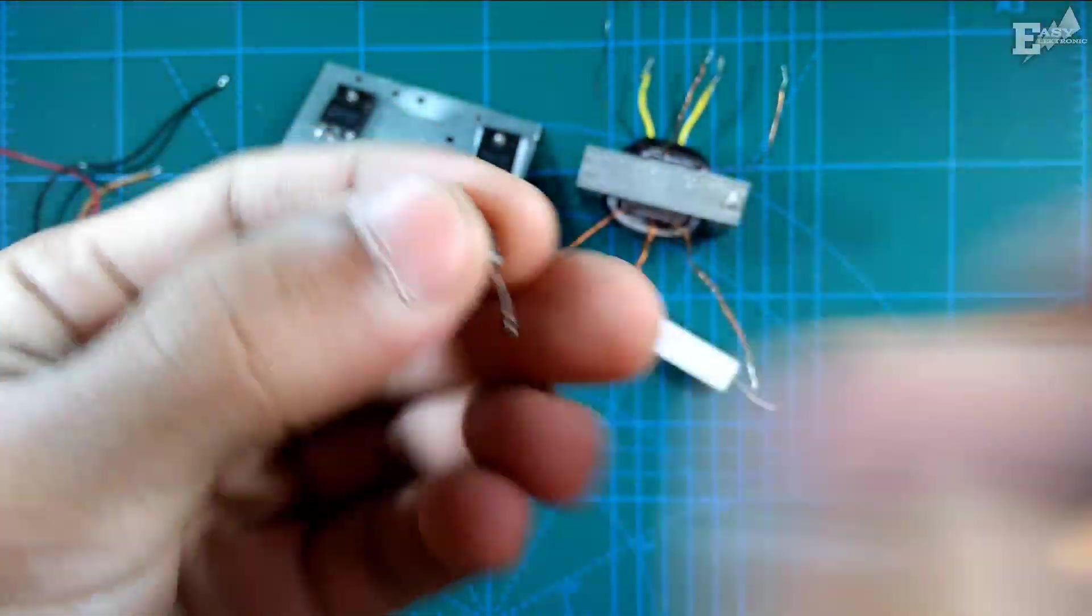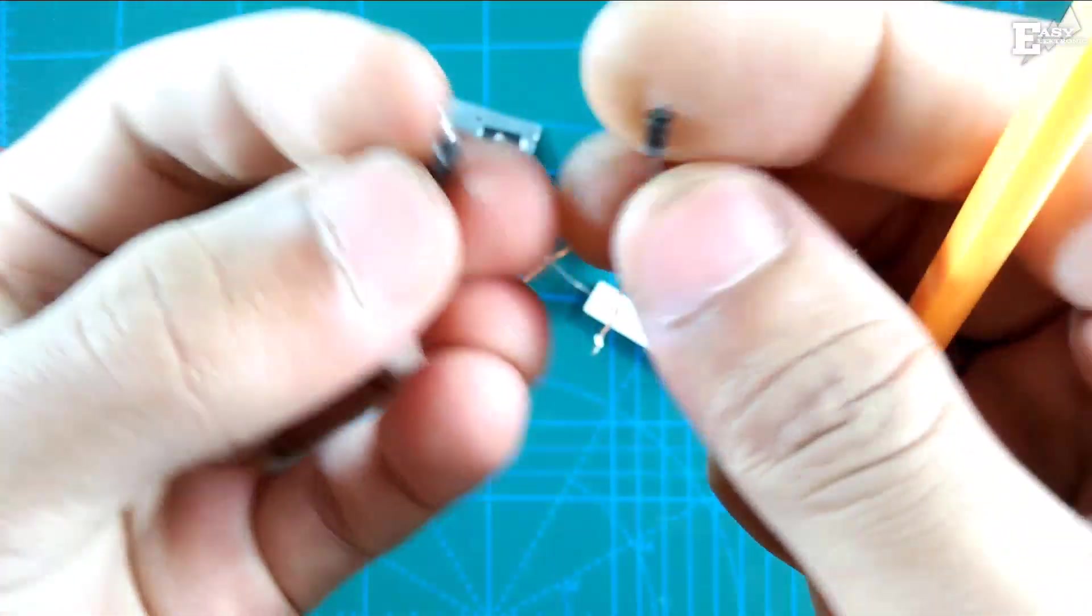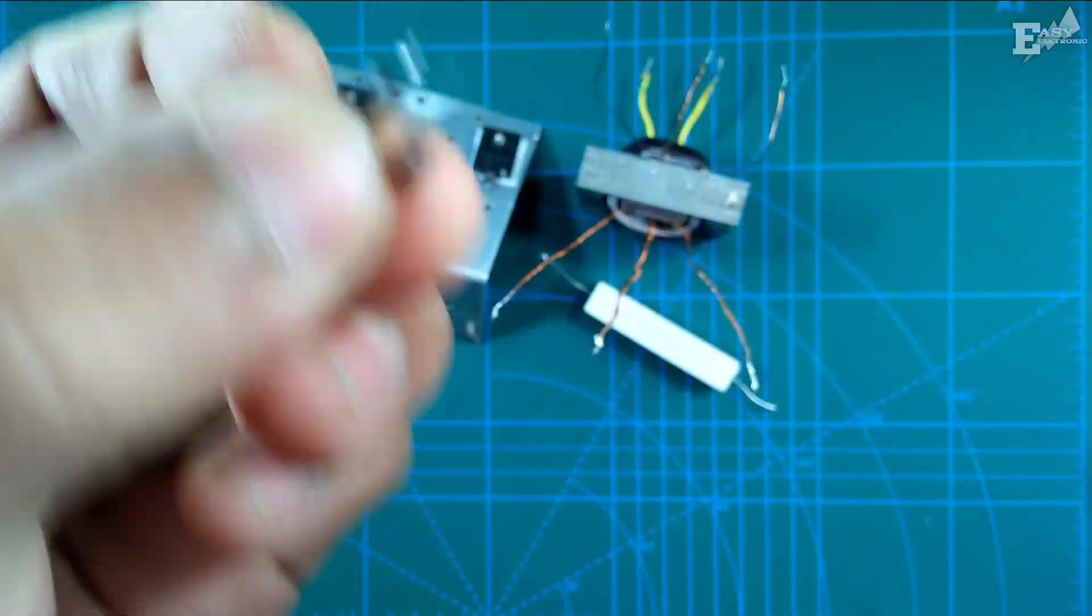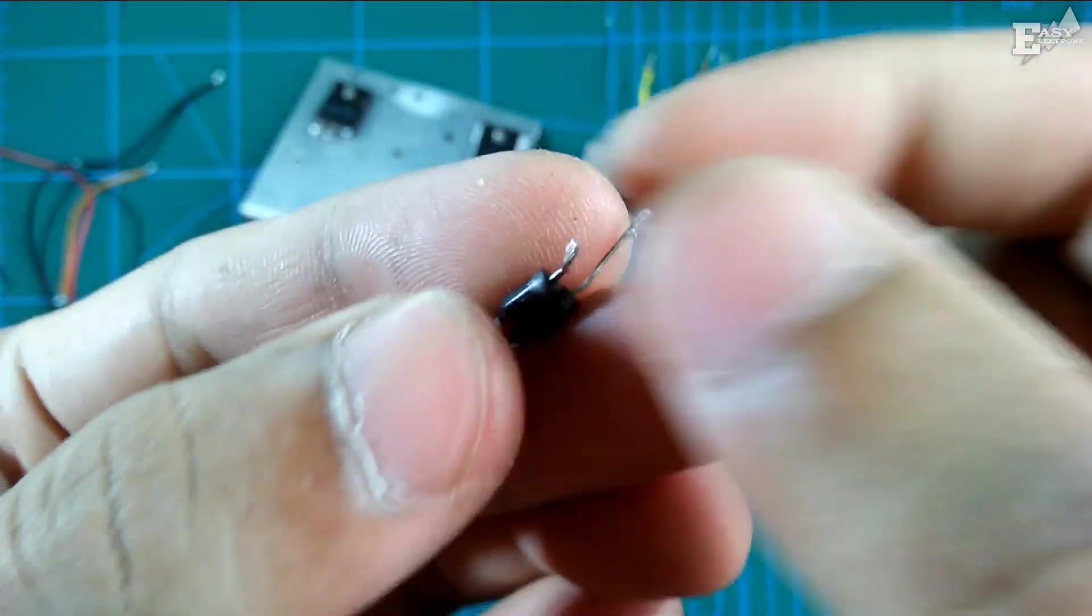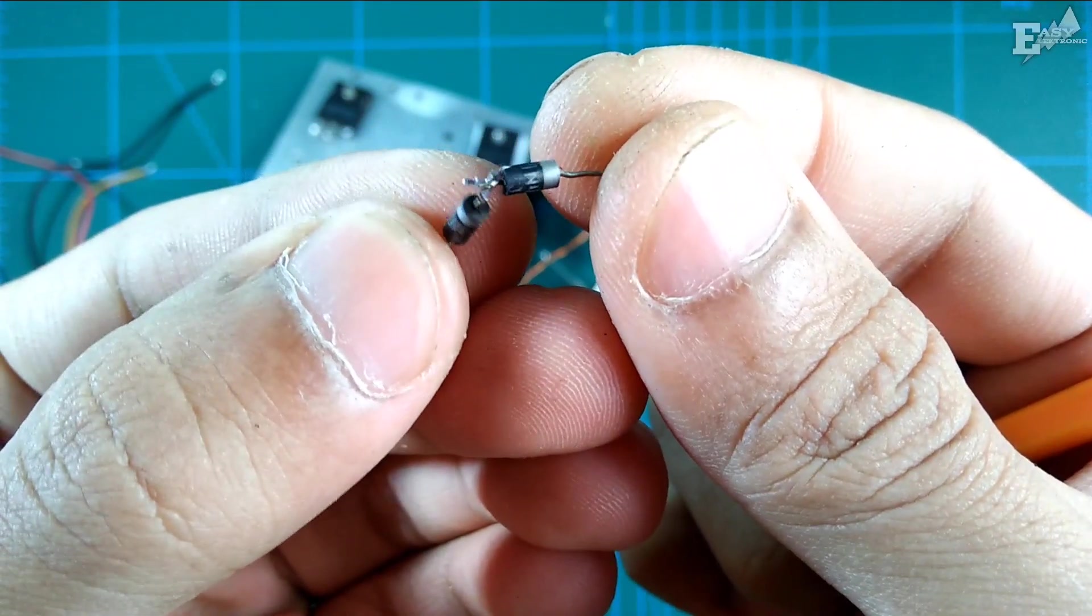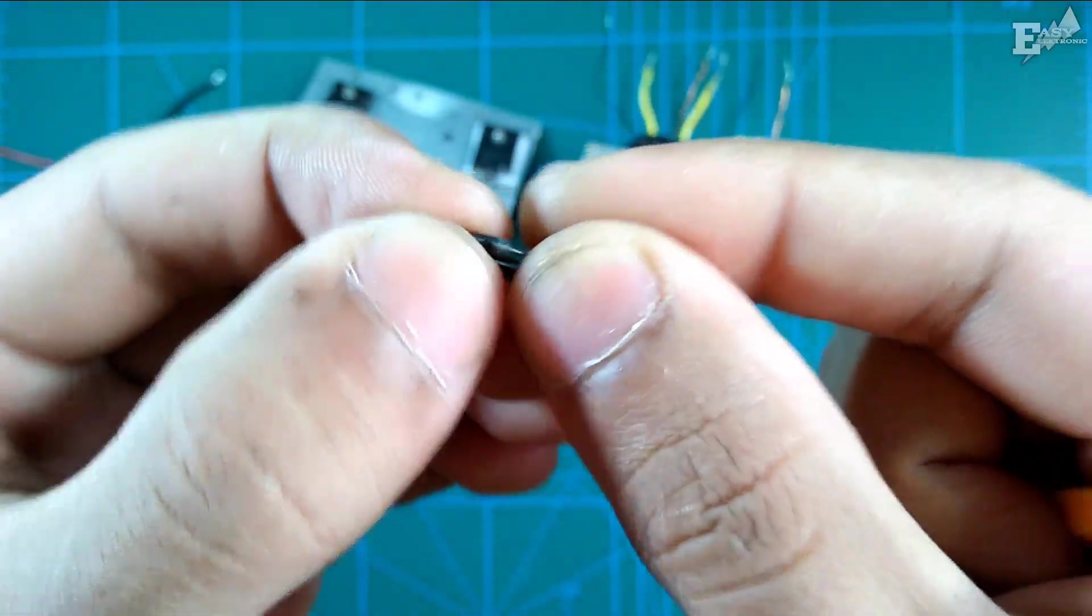Then next, there are 2 diodes, 1 ampere diodes are sufficient. I'm using code 1N4007, 2 pieces.